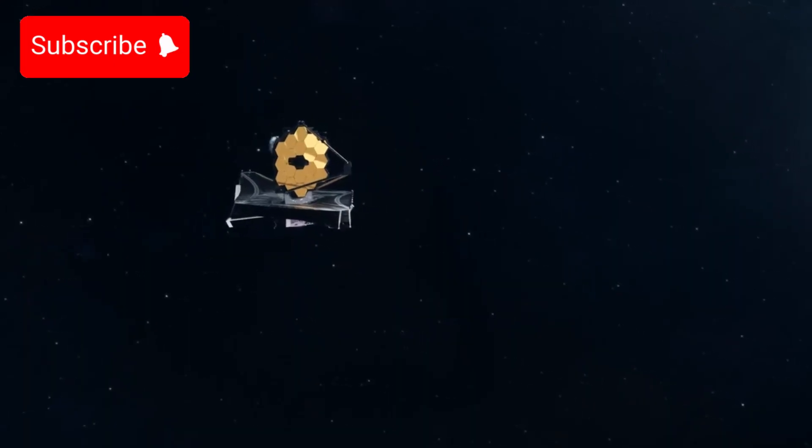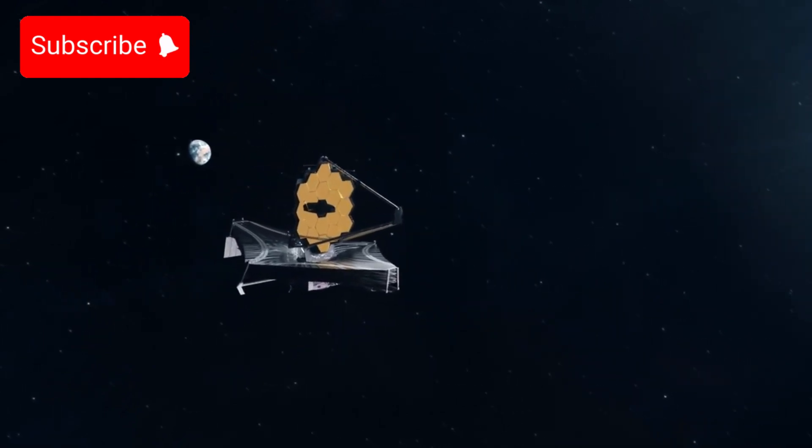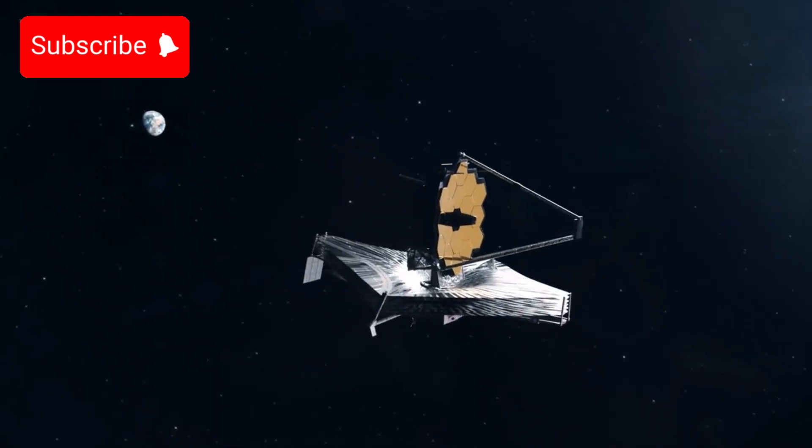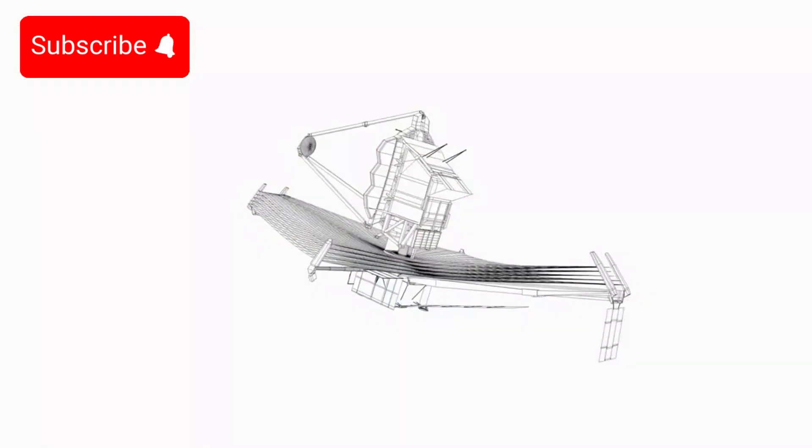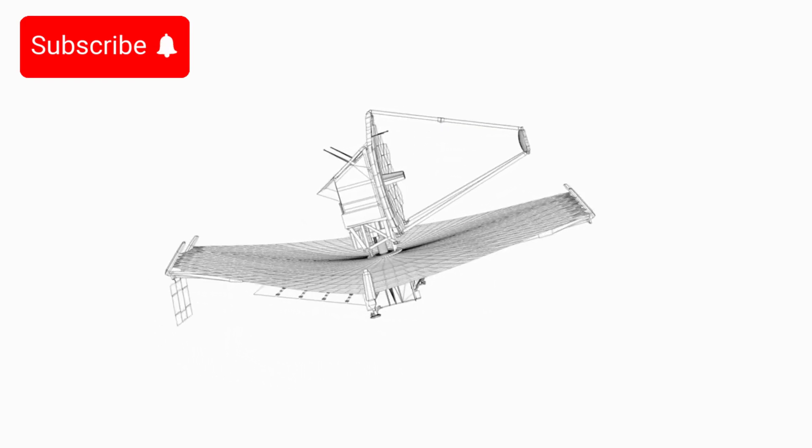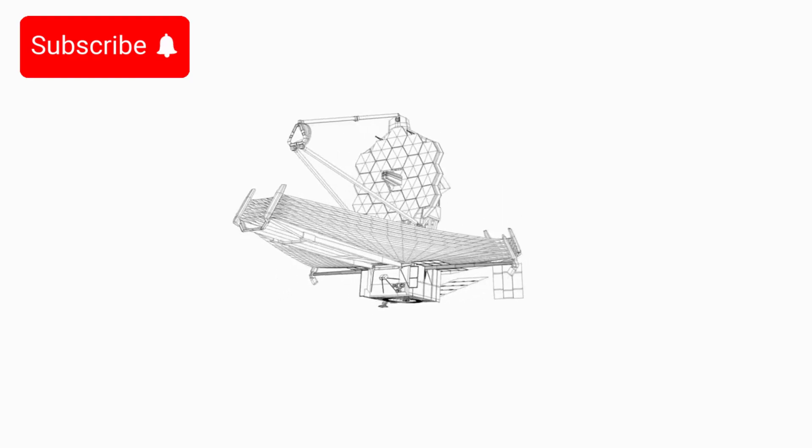Since its launch and deployment, the James Webb Space Telescope has made groundbreaking contributions to our understanding of the universe. Positioned nearly a million miles from Earth, JWST operates in an orbit around the Sun, allowing it to observe celestial phenomena 24-7.